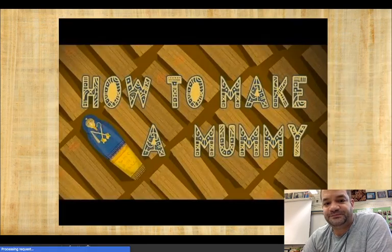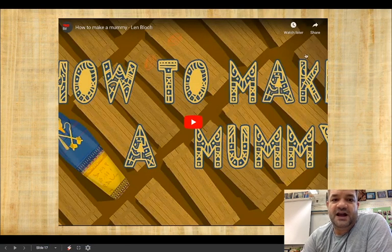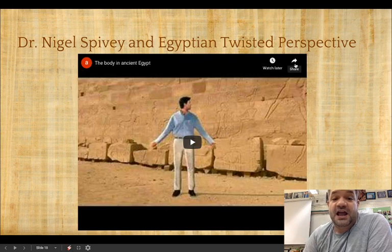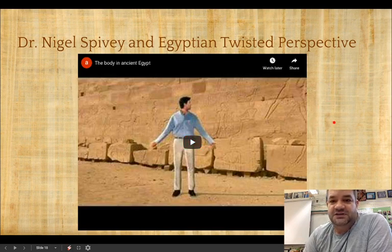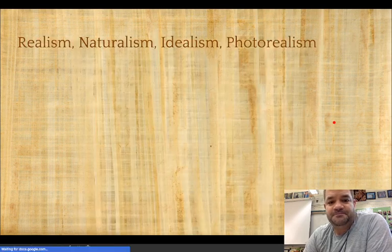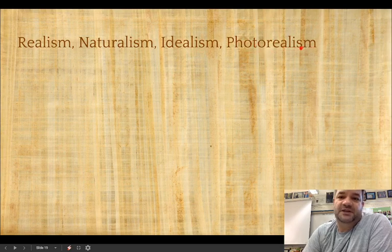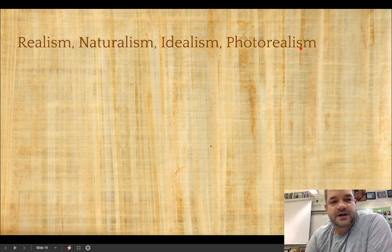If the mummy didn't survive, a likeness would be supplied to house the soul in its place. This introduces the Egyptian canon - the rules for depicting the human body in Egyptian art - which will last for 3,000 years.